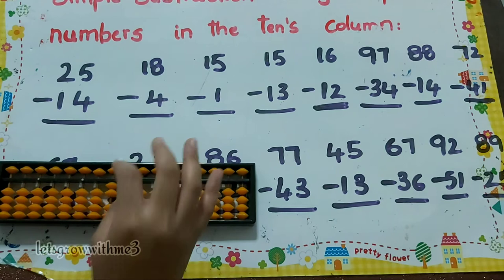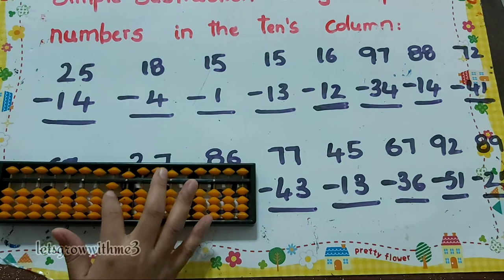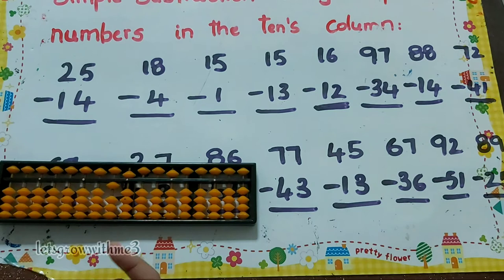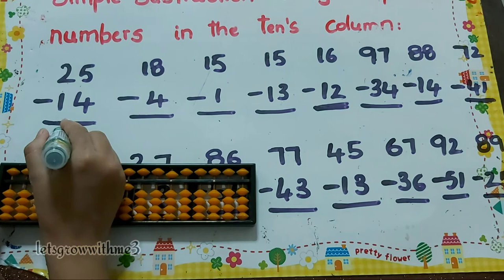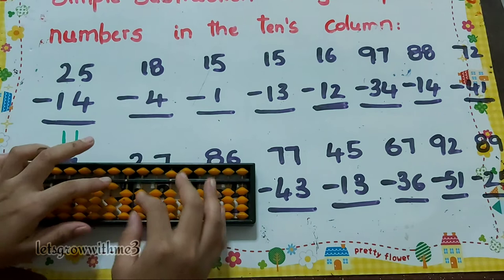25 minus 14. So how to do minus 4? That's the complementary number: minus 5 plus 1. So the answer is 11.